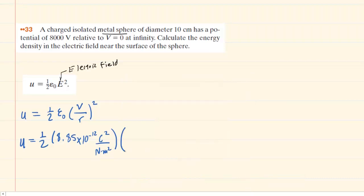Then we multiply by the electric potential V, which is given as 8,000 volts, divided by the radius. Be careful here—the diameter is 10 centimeters so you have to divide that by 2 to get a radius of 5 centimeters. We also have to convert the centimeters into meters, so you'll have 5 multiplied by 10 to the minus 2, which converts the radius into meters. And don't forget to square it.